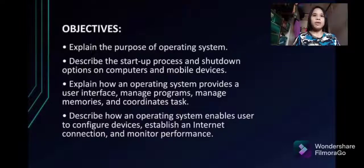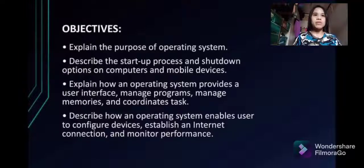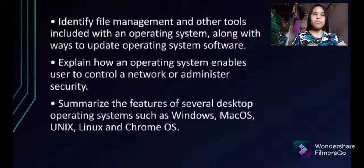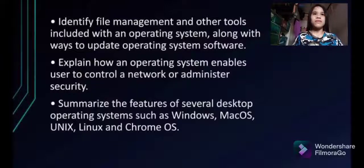Objectives: Explain the purpose of an operating system. Describe the startup process and shutdown options on computers and mobile devices. Explain how an operating system provides a user interface, manages programs, manages memory, and coordinates tasks. Describe how an operating system enables users to configure devices, establish an internet connection, and monitor performance. Identify file management and other tools included with an operating system, along with ways to update operating system software. Explain how an operating system enables users to control a network or administer security. Summarize the features of several desktop operating systems such as Windows, Mac OS, Unix, Linux, and Chrome OS.